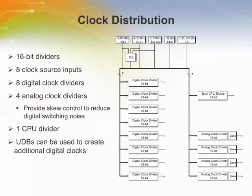Four 16-bit clock dividers generate clocks for the analog system components that require clocking, like A-to-D converters and mixers. The analog clock dividers include skew control to ensure that critical analog events do not occur simultaneously with digital switching events. This is done to reduce analog system noise.